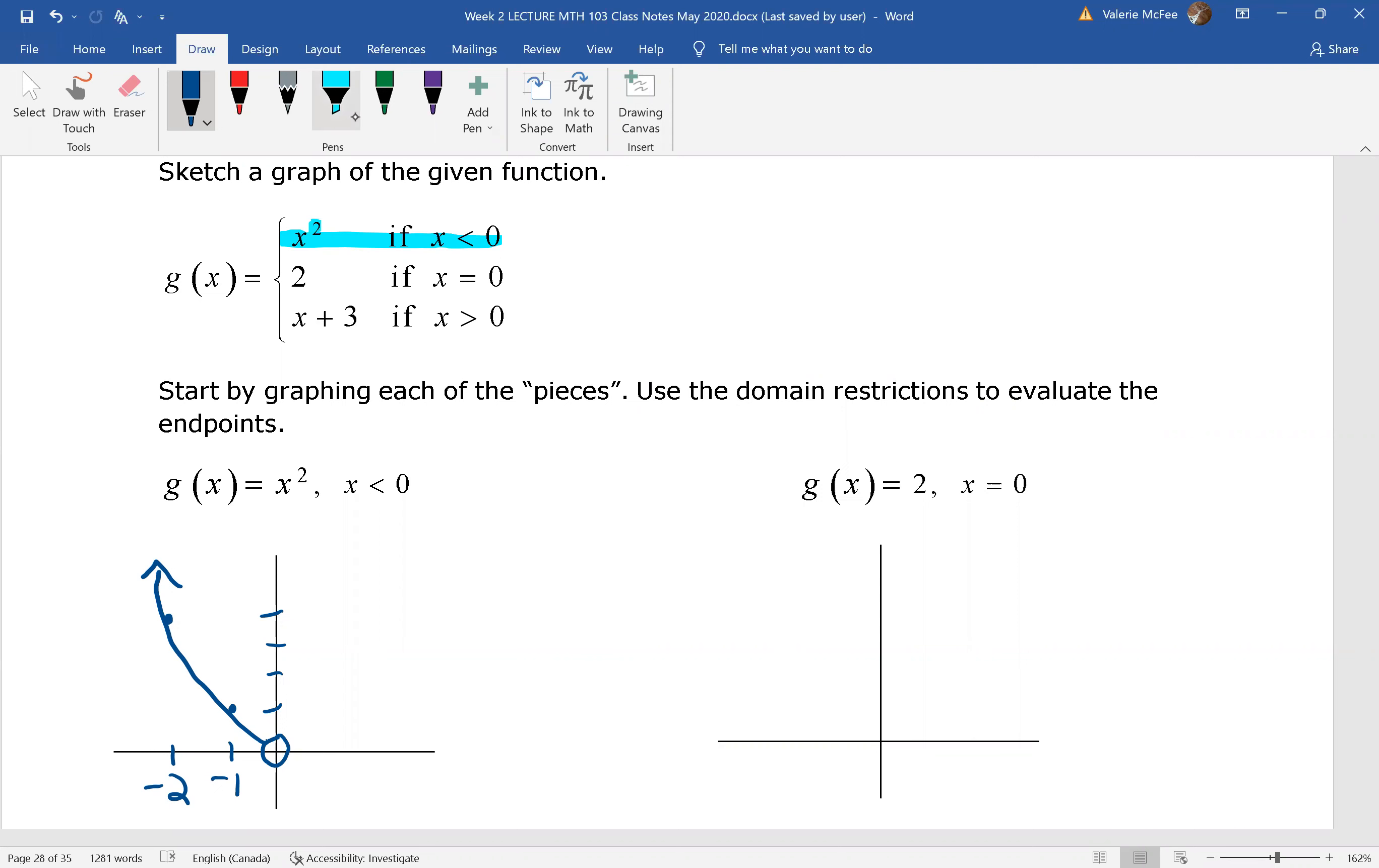The second piece we want to graph on the next xy-axis is this one: 2 if x equals 0. This is just a single point on the graph. When x is 0, the g of x or y equals 2. That's it. We don't want x greater than 0. We don't want x less than 0. We only want x equals 0.